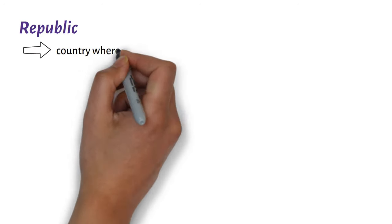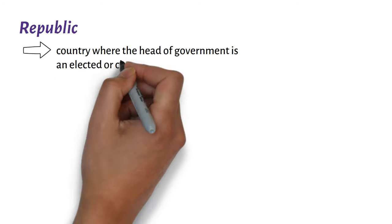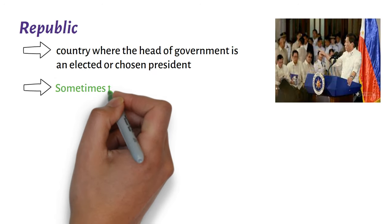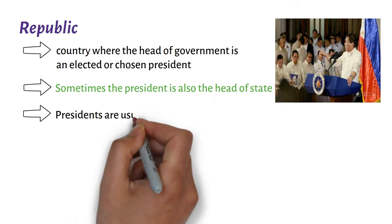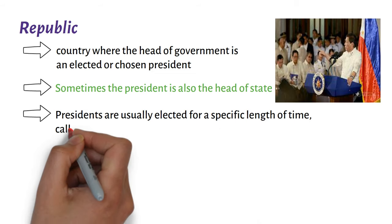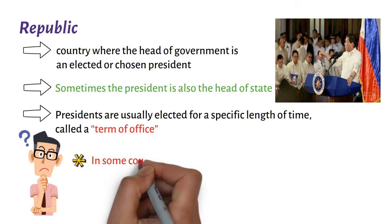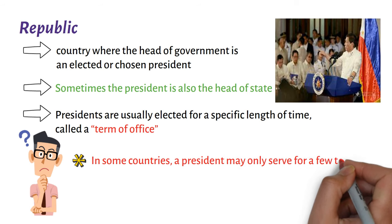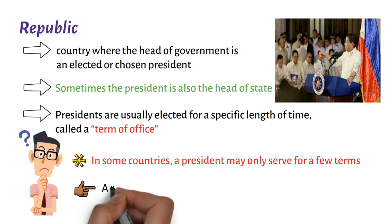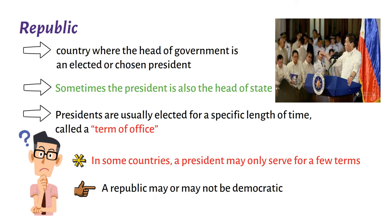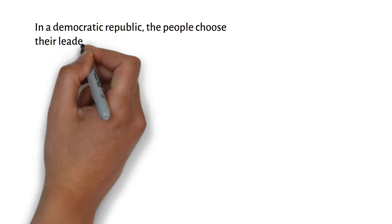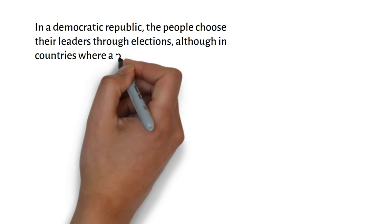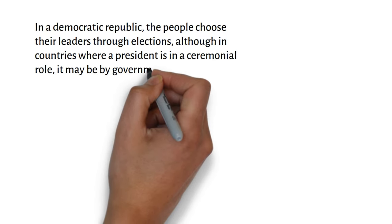On Republic. A republic is a country where the head of government is an elected or chosen president. Sometimes the president is also the head of state. Presidents are usually elected for a specific length of time, called a term of office. In some countries, a president may only serve for a few terms. A republic may or may not be democratic. In a democratic republic, the people choose their leaders through elections, although in countries where a president is in a ceremonial role, it may be by government appointment rather than by election.